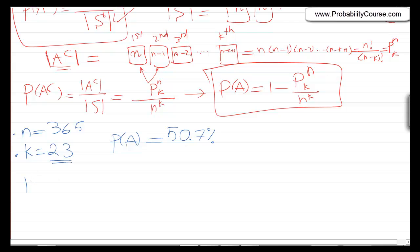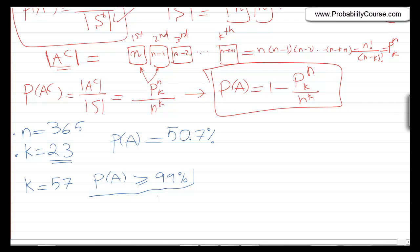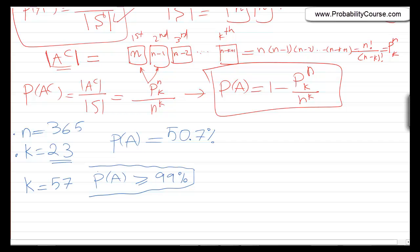It's usually surprising to most people — it was surprising to me the first time I saw this problem. If you choose k equals 57, the probability of finding two people with the same birthday goes up to more than 99%. With just 57 people, you're almost certain to find two people sharing a birthday. That's why this problem is called the birthday paradox — because the result is so surprising.